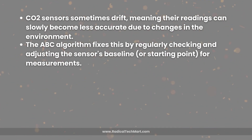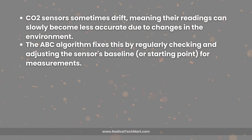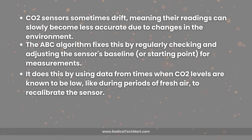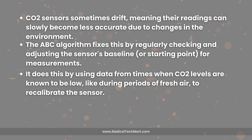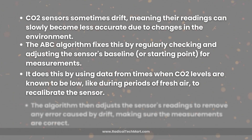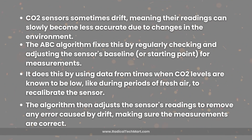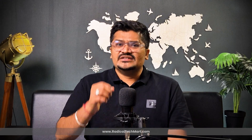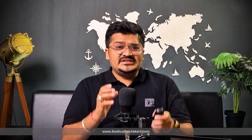The ABC algorithm fixes drift by regularly checking and adjusting the sensor's baseline — the starting point for measurement. It uses data from times when CO2 levels are known to be low, such as during periods of fresh air, to recalibrate the sensor. The algorithm then adjusts the readings to remove any error caused by drift, and continuously updates these adjustments in real time, so even if the environment changes, the sensor stays accurate. This helps the eSense CO2 transmitter provide reliable measurements where accurate air quality monitoring is needed.